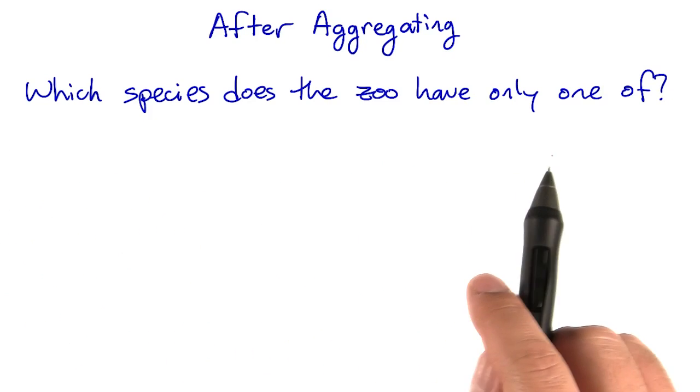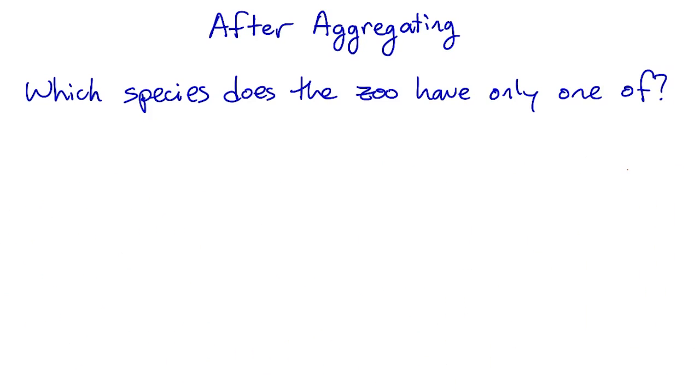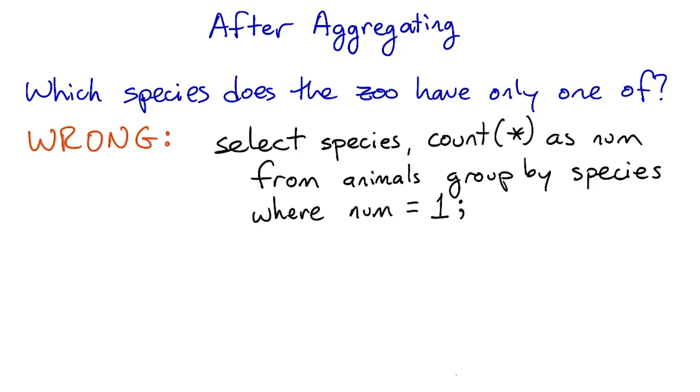Which species does the zoo have only one of? That seems like a pretty straightforward question. But it turns out that you can't answer it like this.